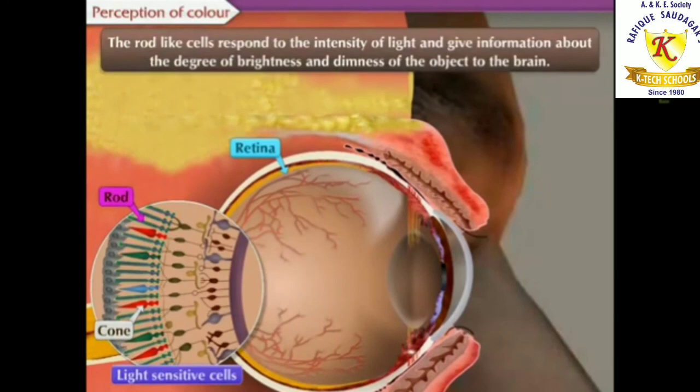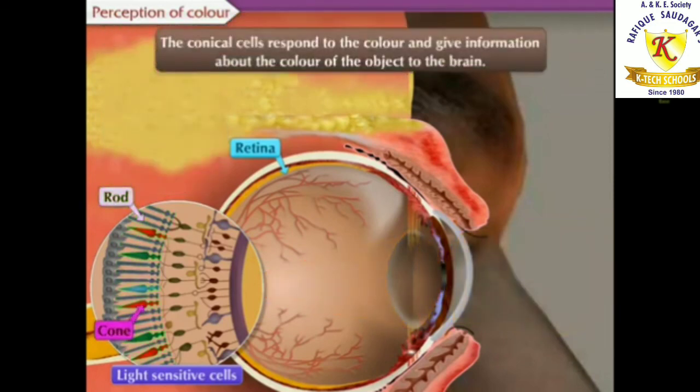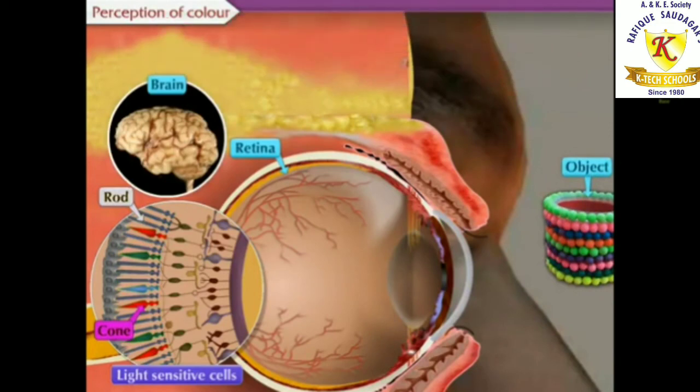The rod-like cells respond to the intensity of light and give information about the degree of brightness and dimness of the object to the brain. The conical cells respond to the color and give information about the colors of the object to the brain.